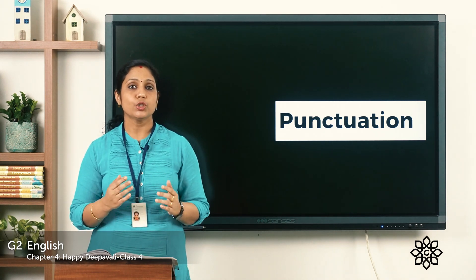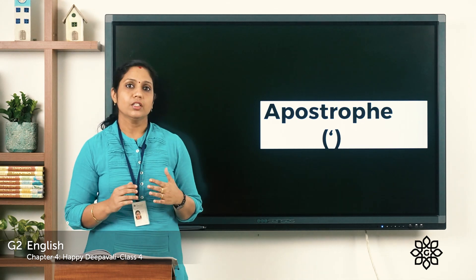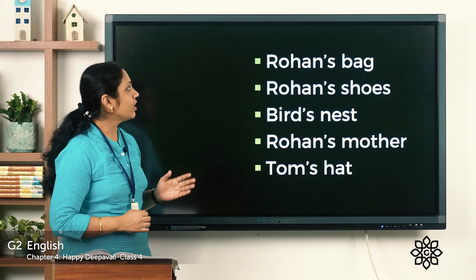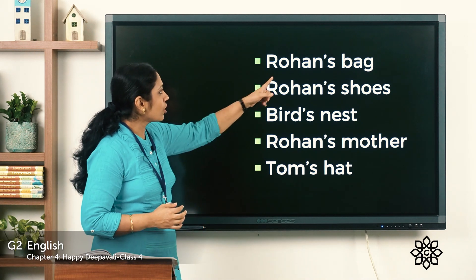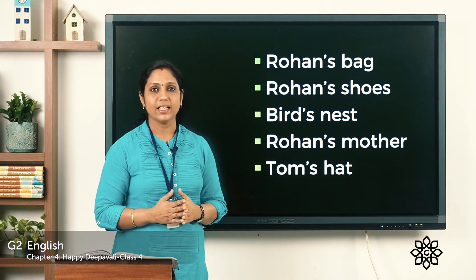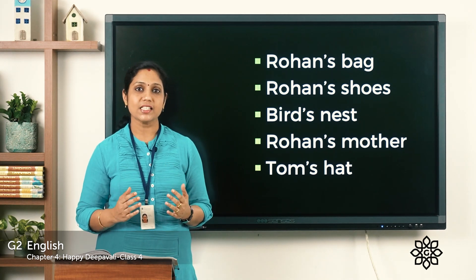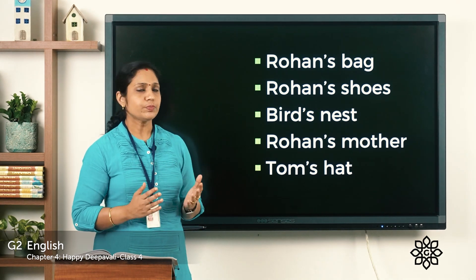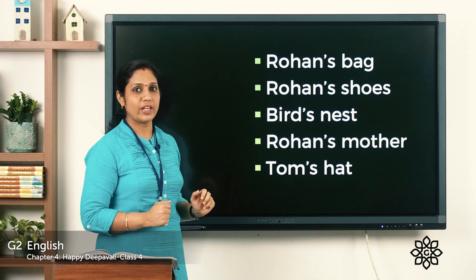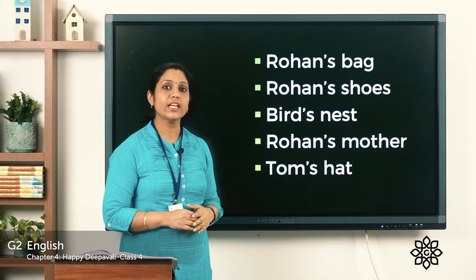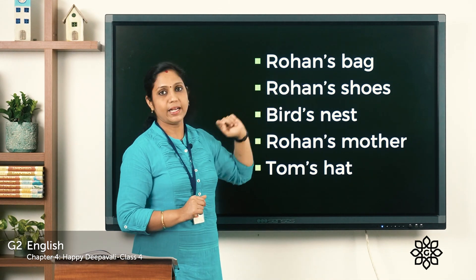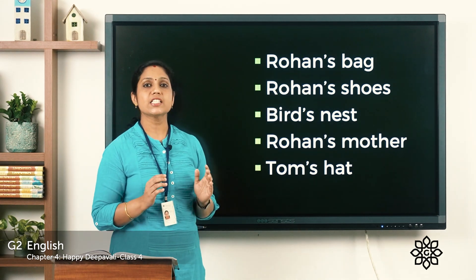We've learned full stop, question mark, and exclamation mark. Today we are going to learn about the apostrophe. What is an apostrophe? Look at this sentence — 'Rohan's bag.' Here an apostrophe is inserted and after that an 's' is written. That means the bag belongs to Rohan. So the apostrophe tells us that something belongs to someone.